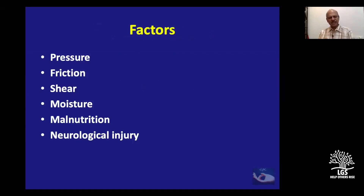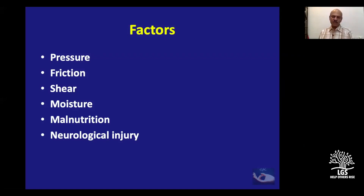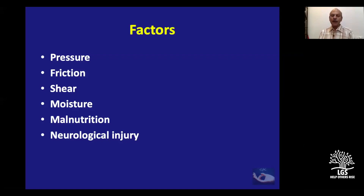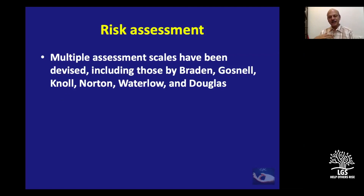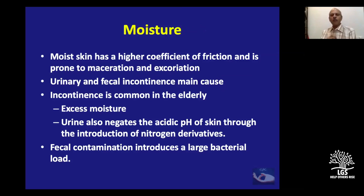The risk factors we need to see beyond pressure, friction, and shear are: moisture — which worsens the effect of pressure and shear on skin — malnutrition, and neurological injury preventing the patient from moving. There are multiple assessment scales. The Braden scoring system is important. Moisture has a higher coefficient of friction and makes skin more prone to maceration and excoriation. The main cause of increased moisture is urinary and fecal incontinence, especially in patients with spinal injury.